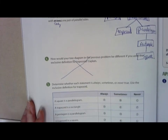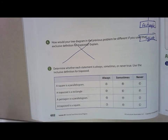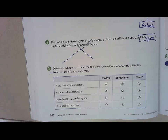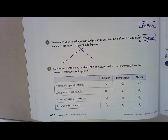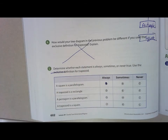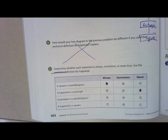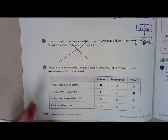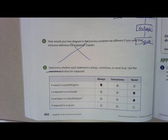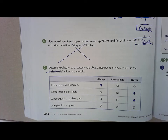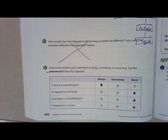Number five: determine whether each statement is always, sometimes, or never true, using the exclusive definition of trapezoid. A square is a parallelogram — always true. A trapezoid is a rectangle — never true. A pentagon is a parallelogram — never true, because pentagons have five sides and parallelograms have four. A trapezoid is a square — never true. Tear out pages 601 and 602 to turn in on test day.